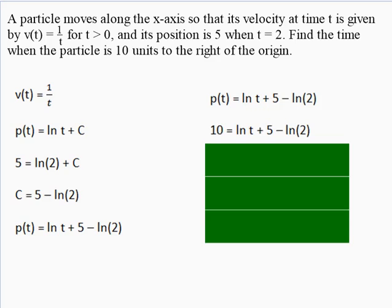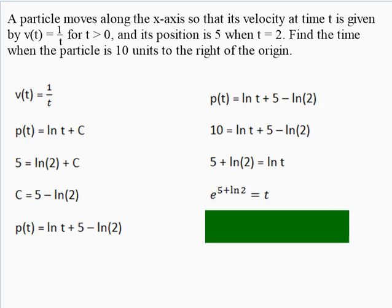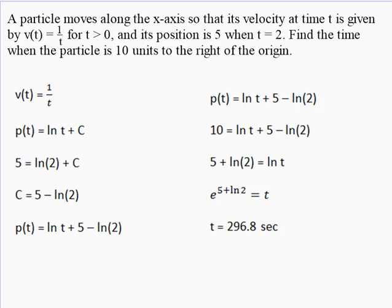To find when the particle is at position 10, we set p(t) = 10 and solve for t. Subtracting 5 from both sides gives 5; adding ln(2) gives 5 + ln(2). Converting from logarithmic to exponential form: since this is log base e, we get t = e^(5 + ln 2). Plugging into a calculator gives almost 300 seconds.